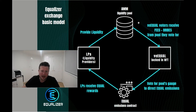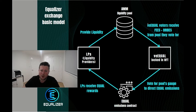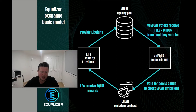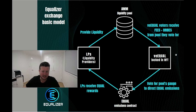Now what happens is you pay a fee when you're using this automated market maker. The people that have locked, as we showed at the start, the people that have locked this VE Equal in this NFT actually get the fees that come through. So anyone that's already locked there — yes, they get to direct the emissions back to the liquidity, but they also get the fees that come through.